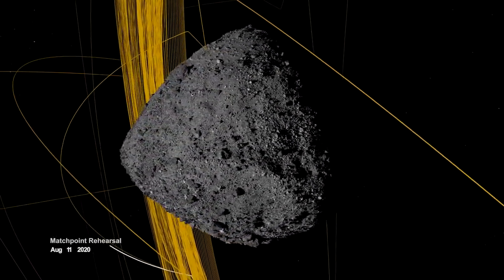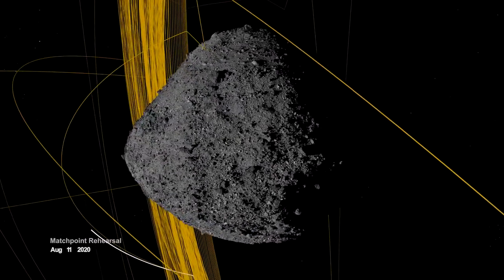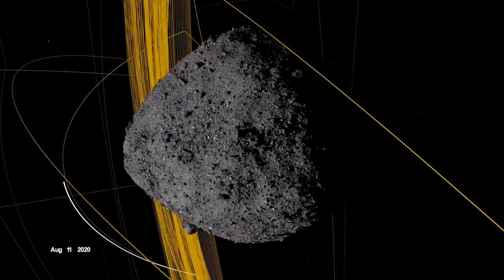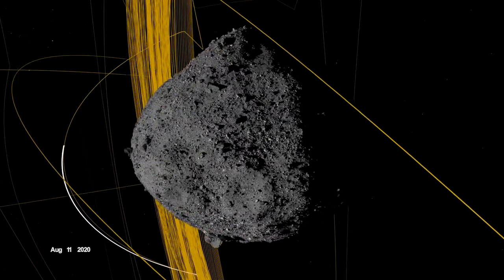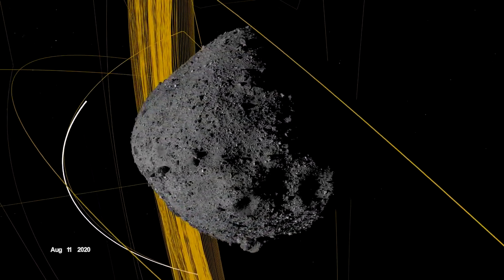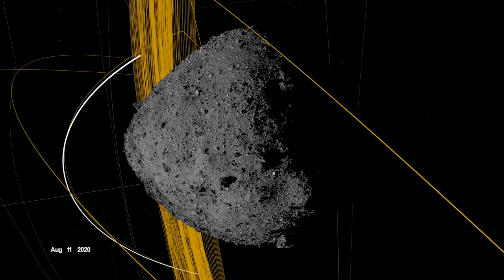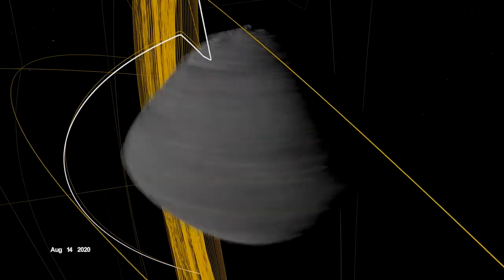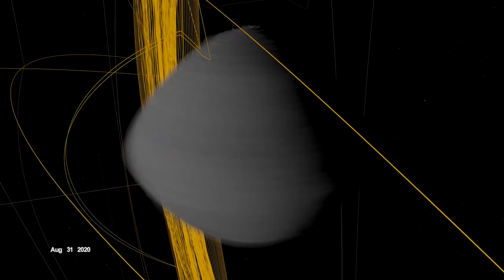On August 11th, OSIRIS-REx departed its home orbit and made a four-hour traverse to Bennu's northern hemisphere. After performing the checkpoint engine burn to begin its descent, it made a second engine burn called matchpoint to match Bennu's rotation before backing away at an altitude of approximately 40 meters.